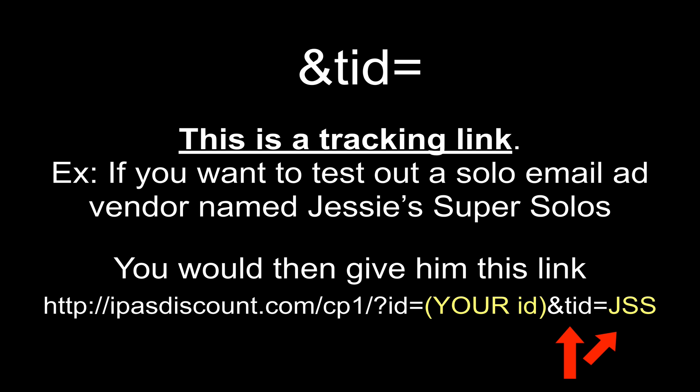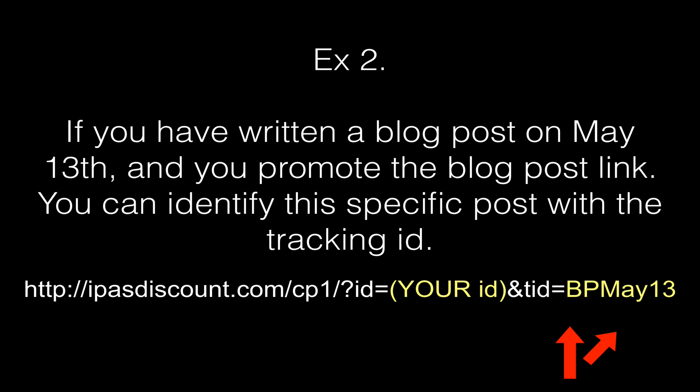JSS would stand for Jesse's Super Solos. Here's another example: let's say you've written a blog post on May 13th and you choose to promote that blog post link. This allows you to identify where your traffic is coming from, where you're getting the clicks from. At the end of TID equals, you could put BP for blog post May 13th. That is the purpose of this tracking ID.